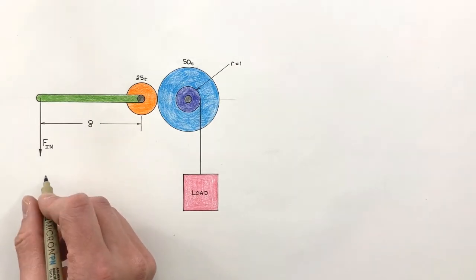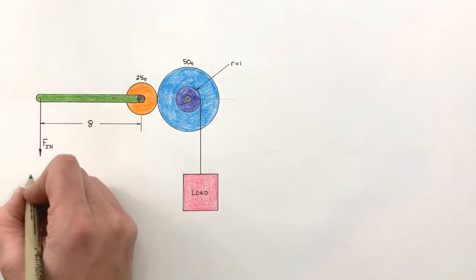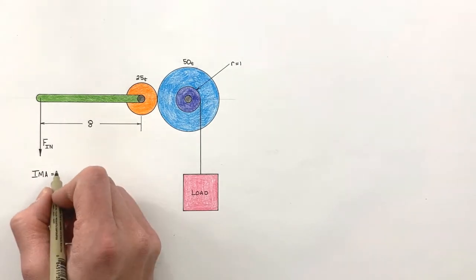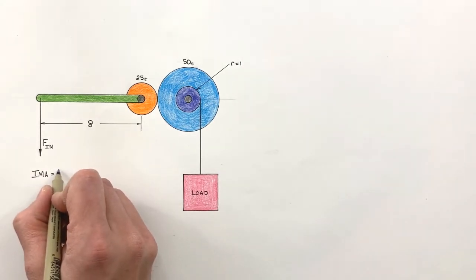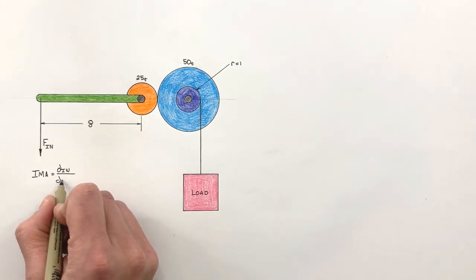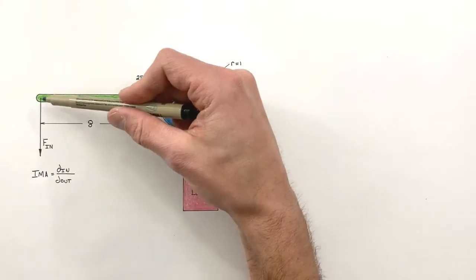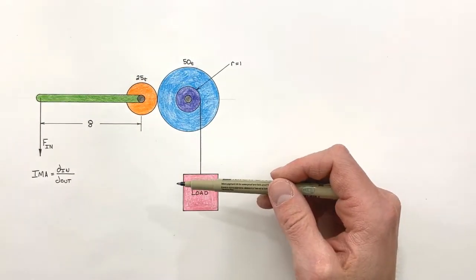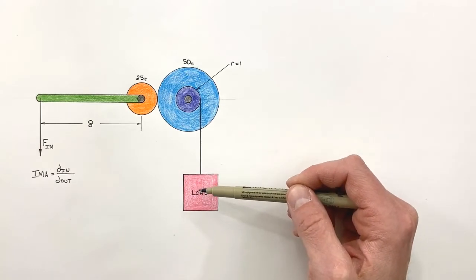For example, when looking at something like the IMA of a lever, we define the IMA of a lever or really any simple machine as distance in over distance out. That is the distance which the input side of the simple machine travels divided by the distance over which the output side of the simple machine travels.